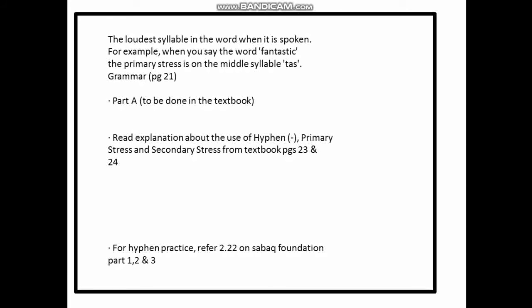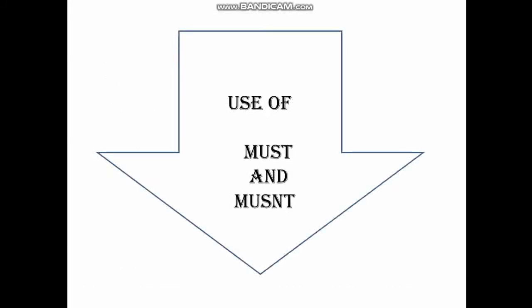For further information you can go to Sabak Foundation. Now let's move to the use of must and mustn't. Must and mustn't are modal verbs — a type of verb used for a specific and targeted purpose to enhance the value of the sentence. Must is used for strong obligation, while mustn't is used for strong prohibition.